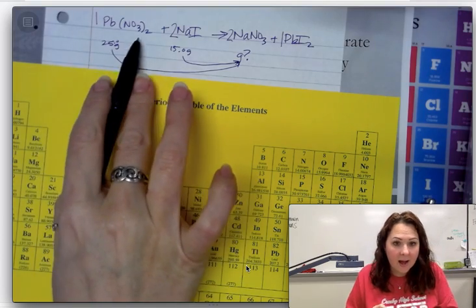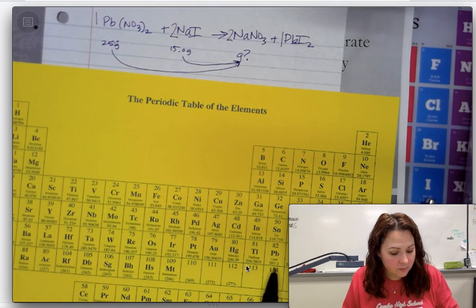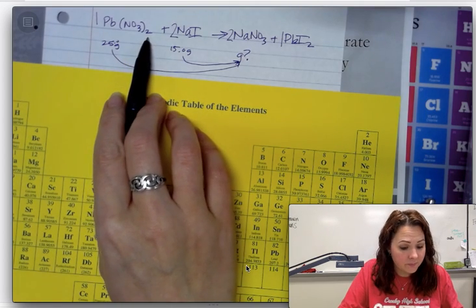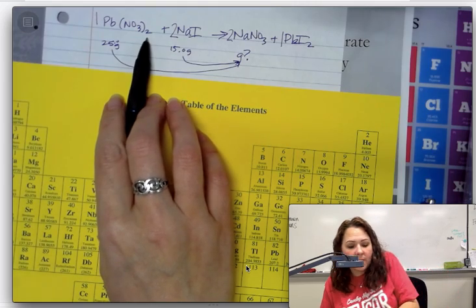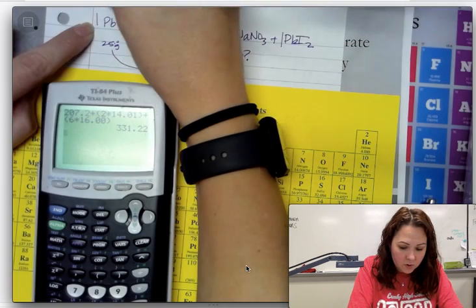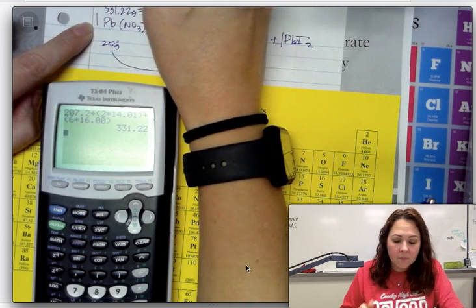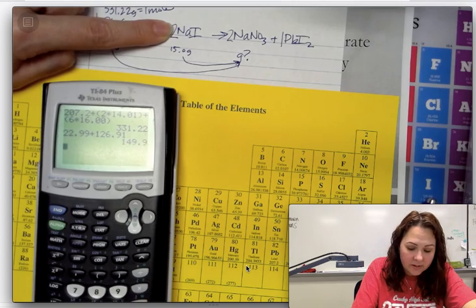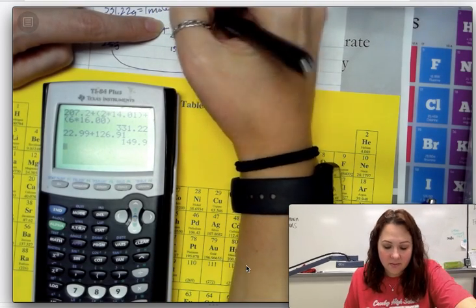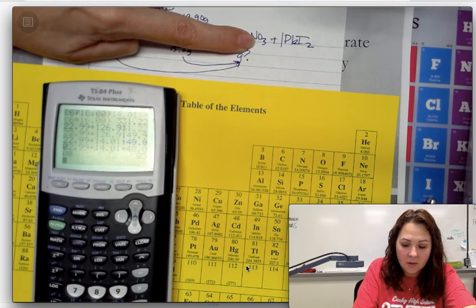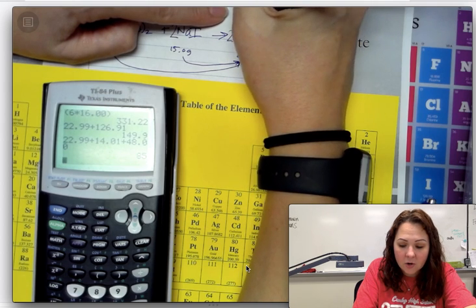For lead(II) nitrate: 1 lead at 207.2, plus 2 nitrogen at 14.01, plus 6 oxygen at 16 — giving a molar mass of 331.22 g/mol. Sodium iodide: 22.99 plus 126.91 gives 149.90 g/mol. And sodium nitrate: 22.99 plus 14.01 plus 3 oxygen (48) gives 85.00 g/mol.